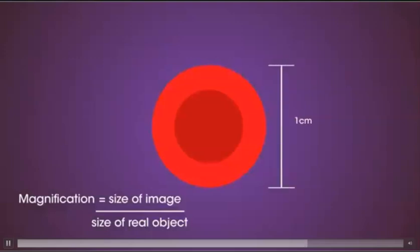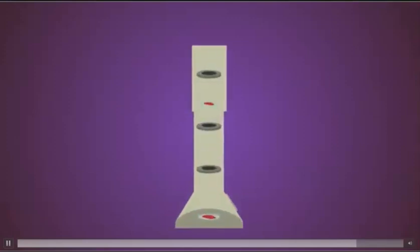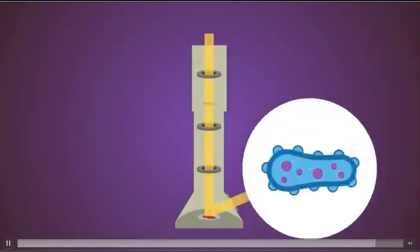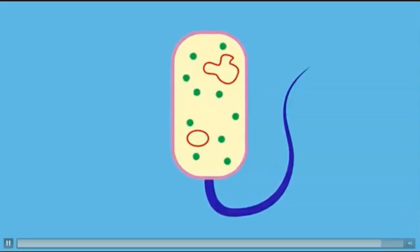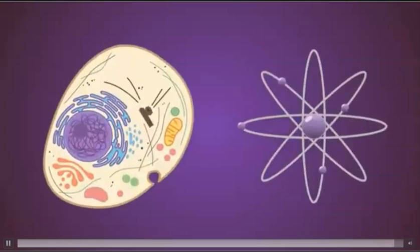Magnification equals size of the image divided by size of the object. So if the diameter of an image of a red blood cell in a book is 1 cm, and the actual diameter of a red blood cell is 0.001 cm, then the magnification must be 1 divided by 0.001, which equals 1000 times. The microscopic world has been opened up even further due to the invention of the electron microscope. These use beams of electrons to form images and have much higher magnifications and resolutions than light microscopes. They have enabled scientists to study objects in much more clarity and detail, from cell organelles like the nucleus membrane to even smaller structures like individual atoms.